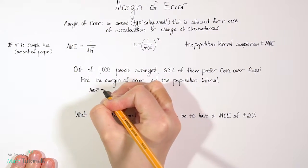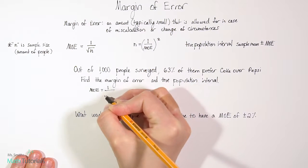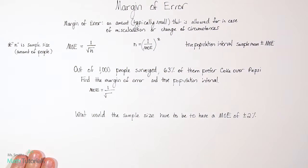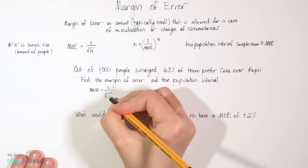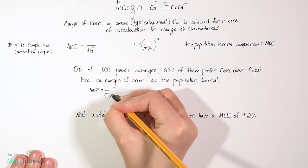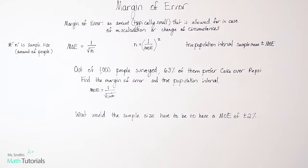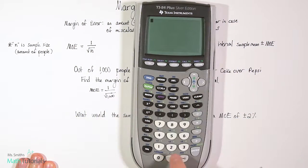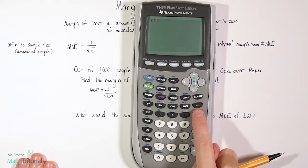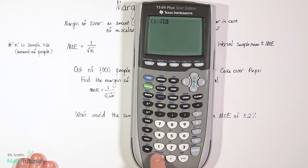So in this case, it's 1,000. So we can find margin of error. So let's bring out our calculator. We can just type that in. So we'll do parenthesis 1 divided by square root of 1,000. And we get a really long decimal.